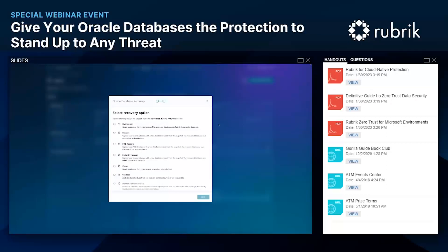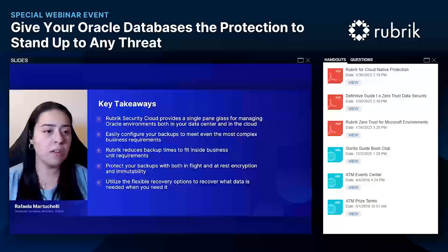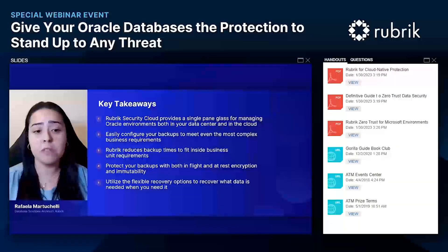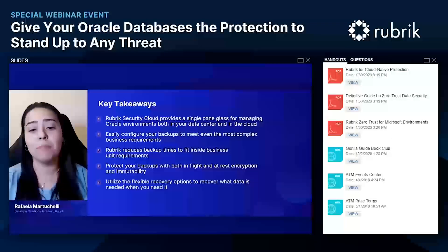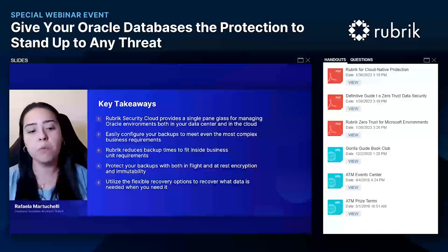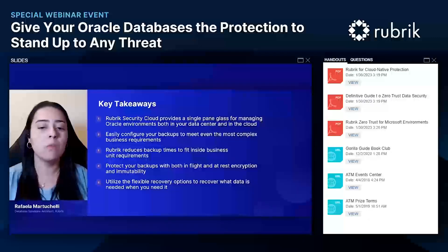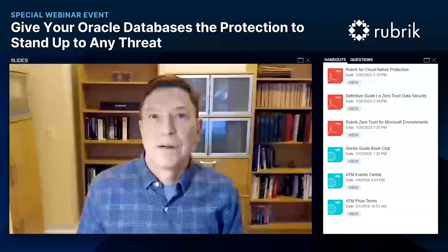Those are our recovery options — the ways you can make your data available quickly and easily for whatever purpose you need. As a quick summary: we talked about the benefits of having a centralized platform to manage all your environments, showed how easy it is to configure Oracle database backups, highlighted the importance of protecting backups against ransomware, and explained how Rubrik offers quicker backup runs and automated recovery options — including getting your database available without restoring data from scratch. Thanks everyone for your time — I hope you found the content useful.